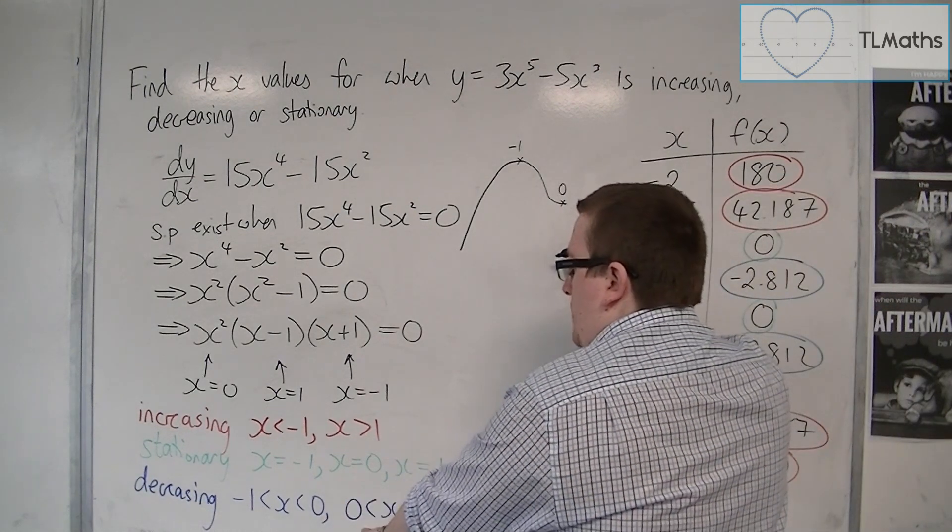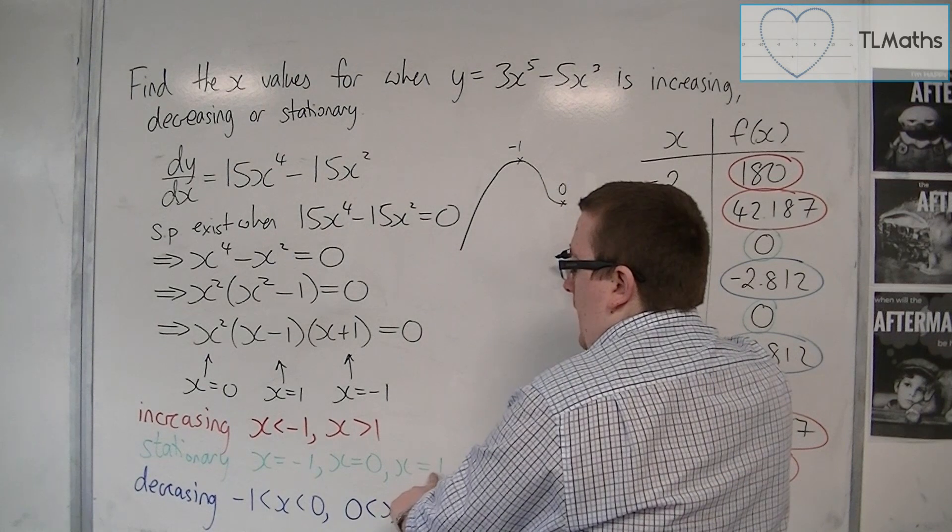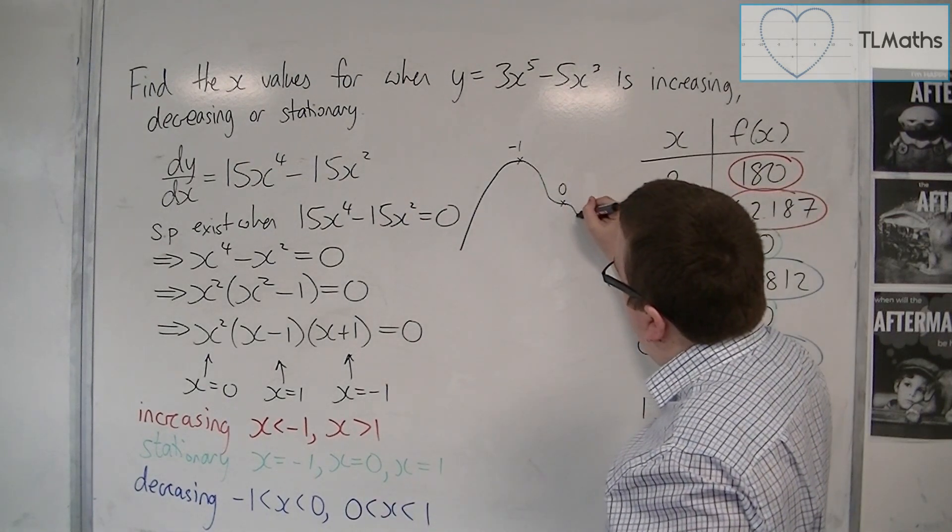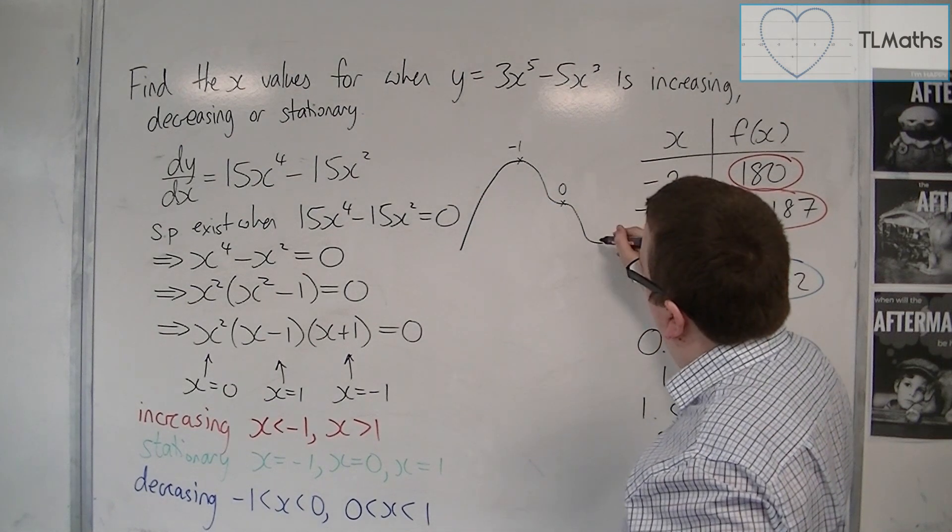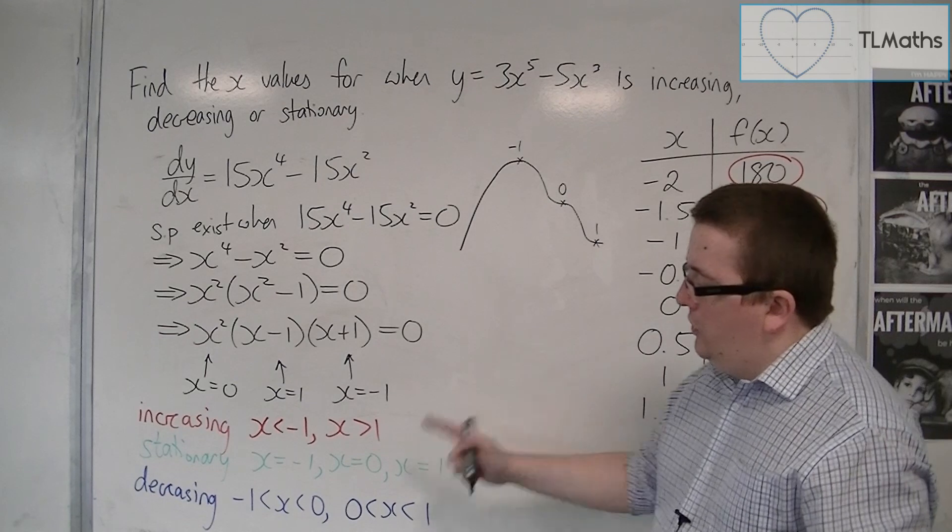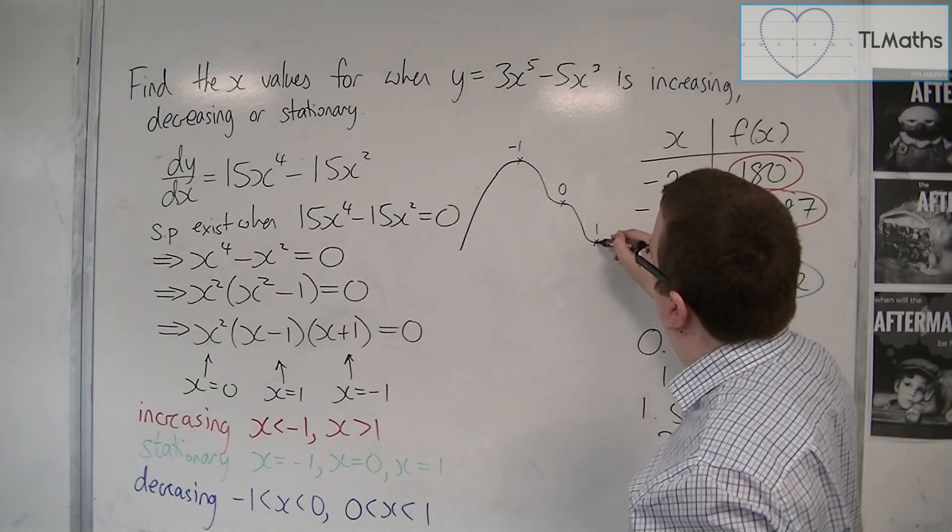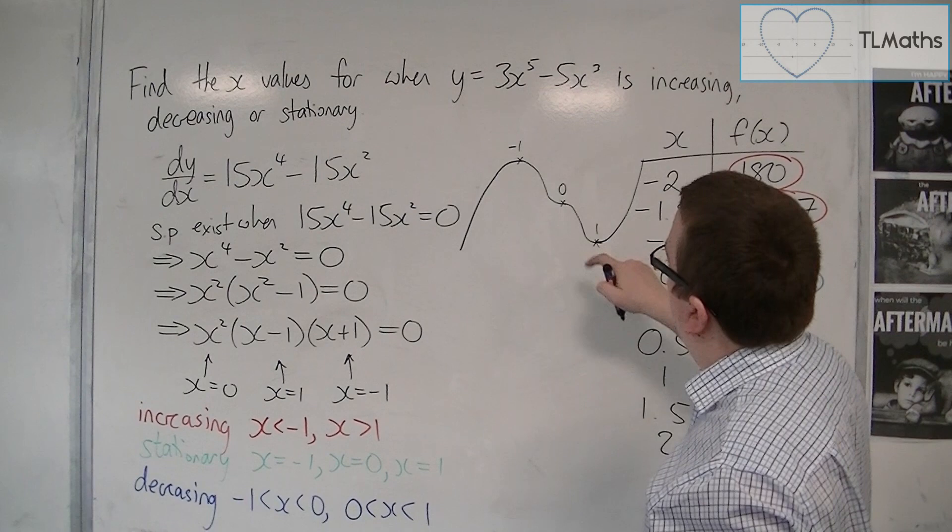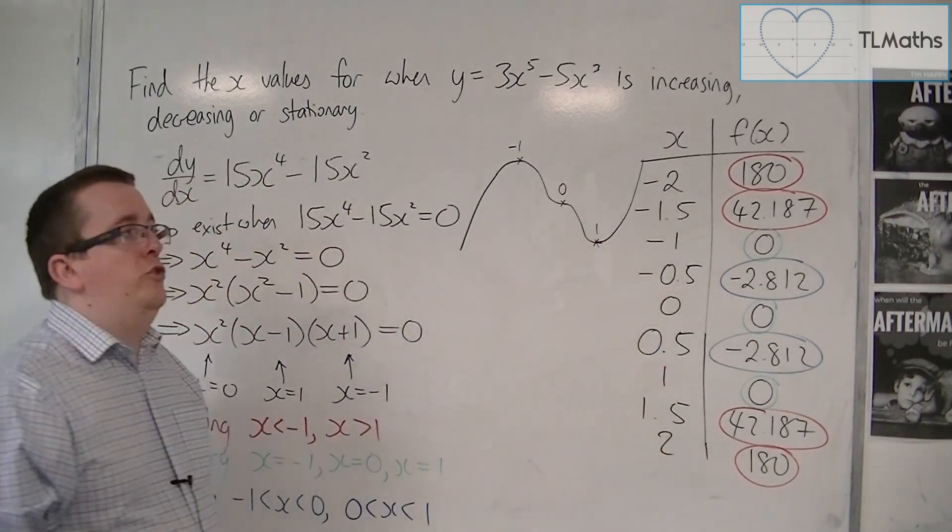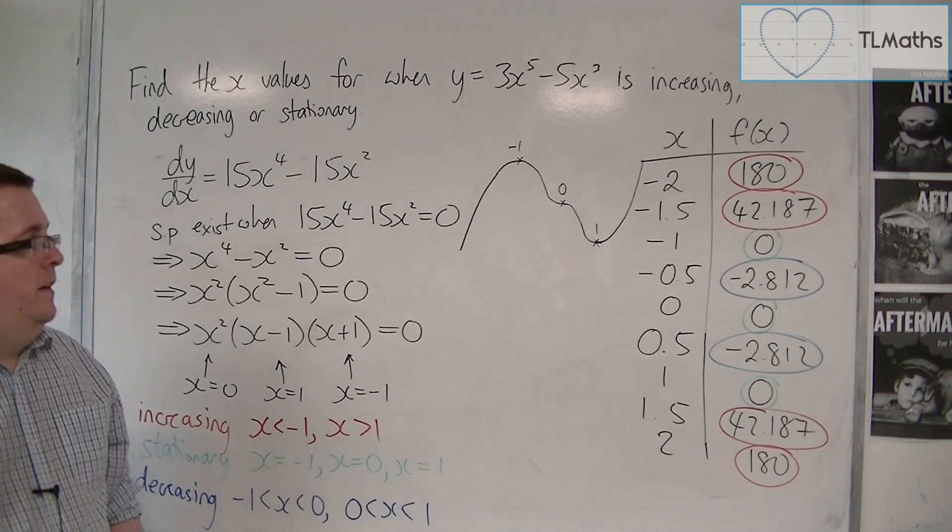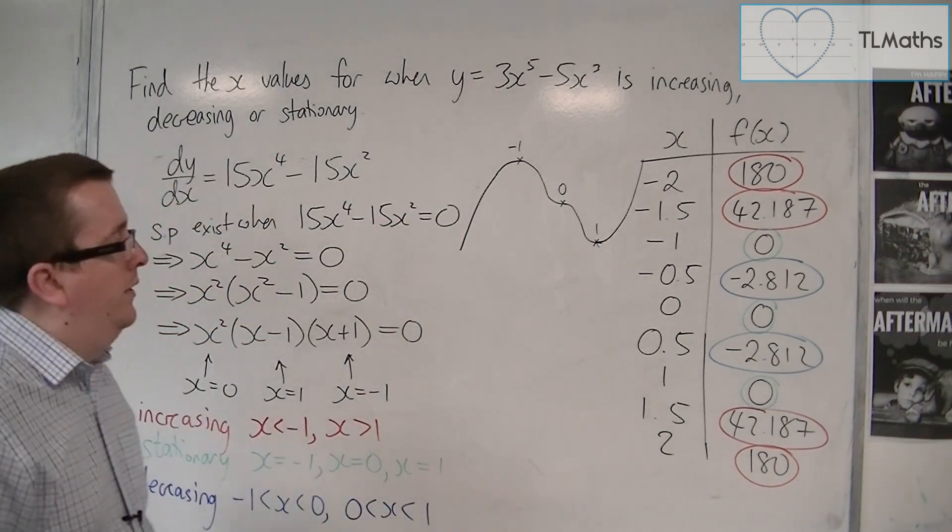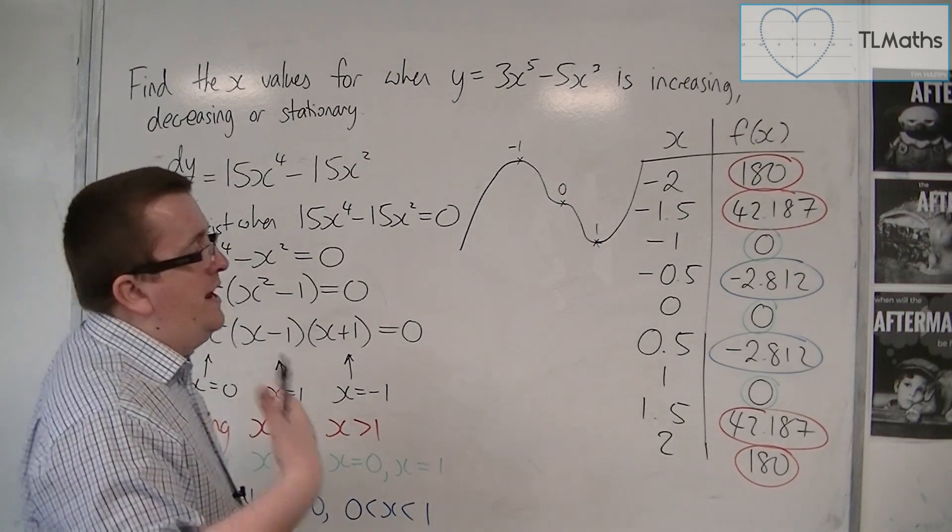When it's getting to the next stationary point between x is 0 and 1, it is decreasing again. And so it is decreasing between 0 and 1. And so the curve must look or have this type of shape. Now, it may not be perfectly to scale, but it is giving you a generic, a general idea of what the curve must look like.